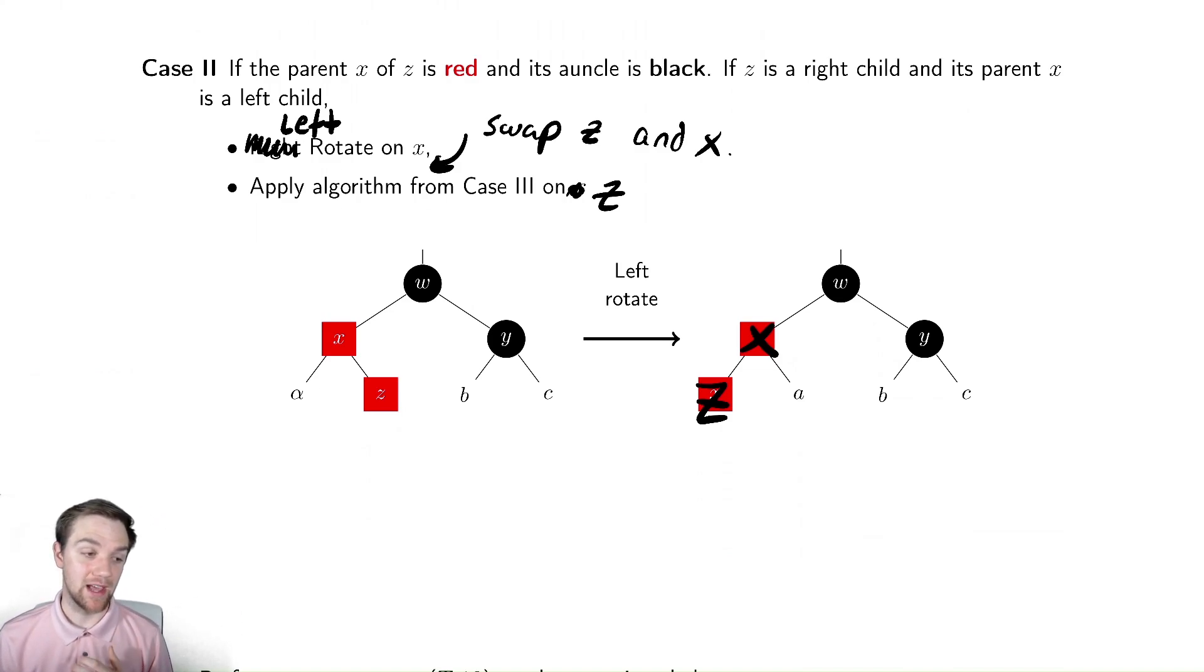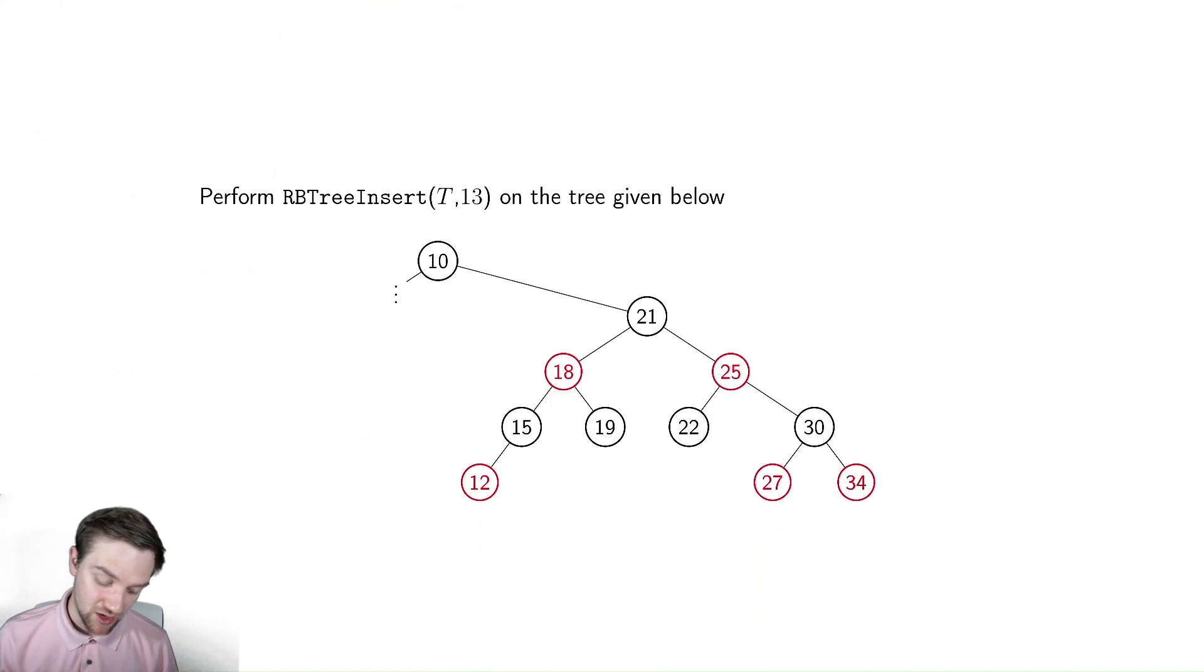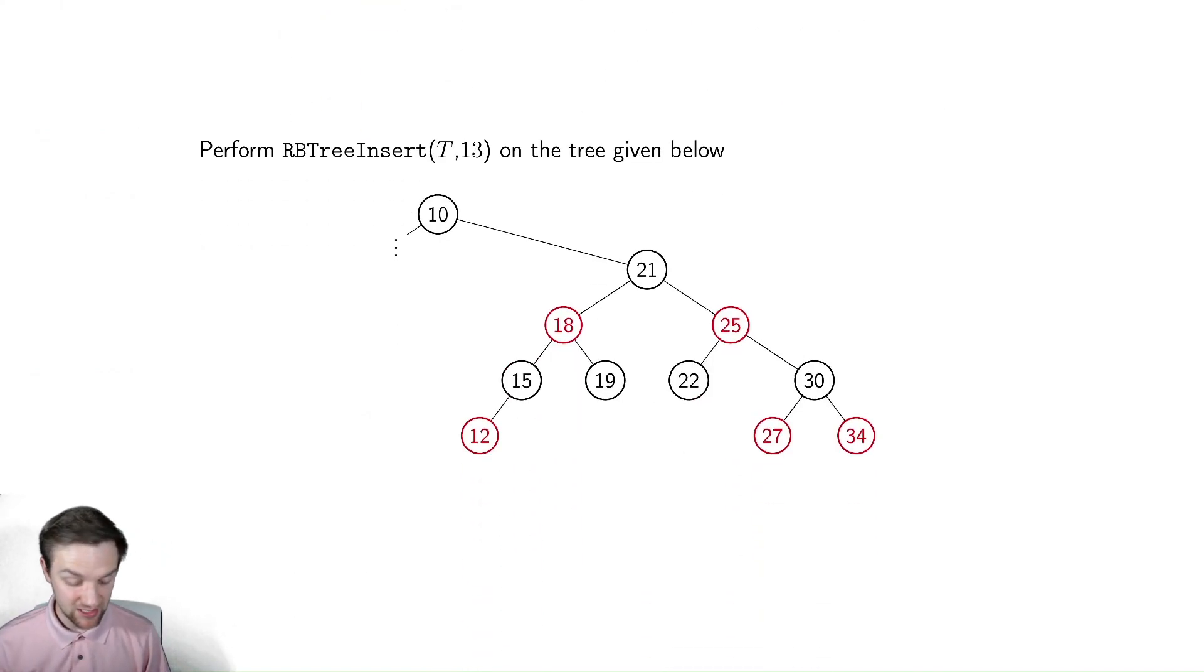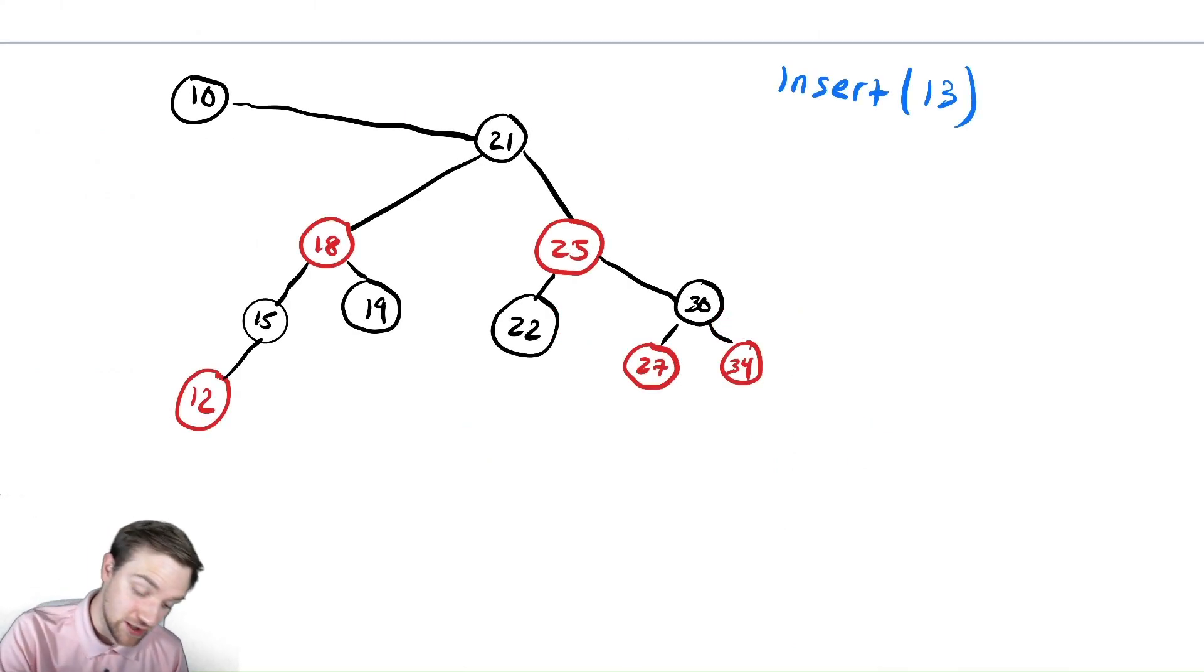Just like we did with the cases one and case three, case two is best understood by performing the algorithm ourselves. So here we are going to insert an element of 13. Let's see how that works. Let's insert 13 into the tree. To do that, we're going to add it to the right of 12. And it's going to be a red node.